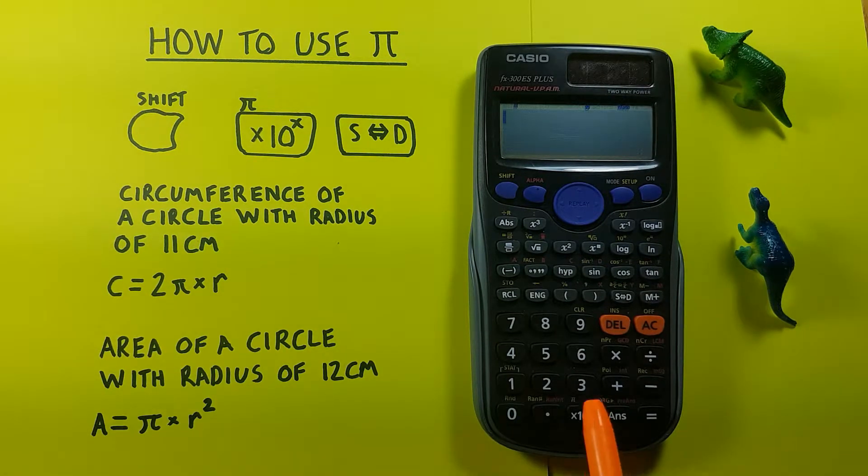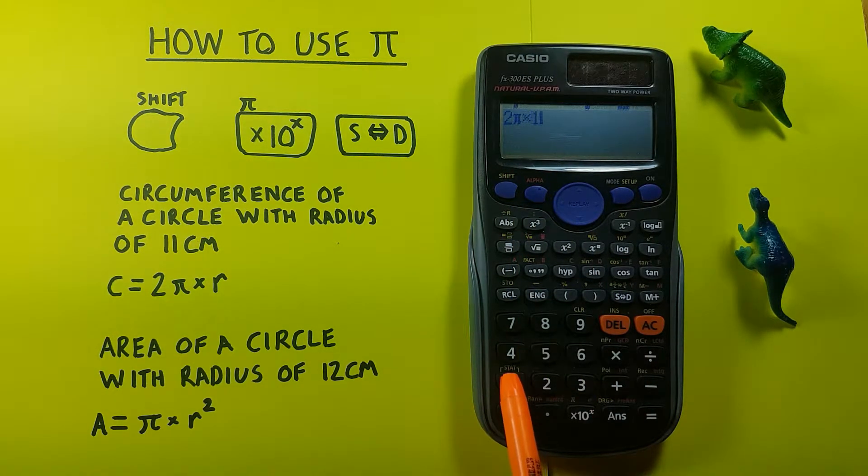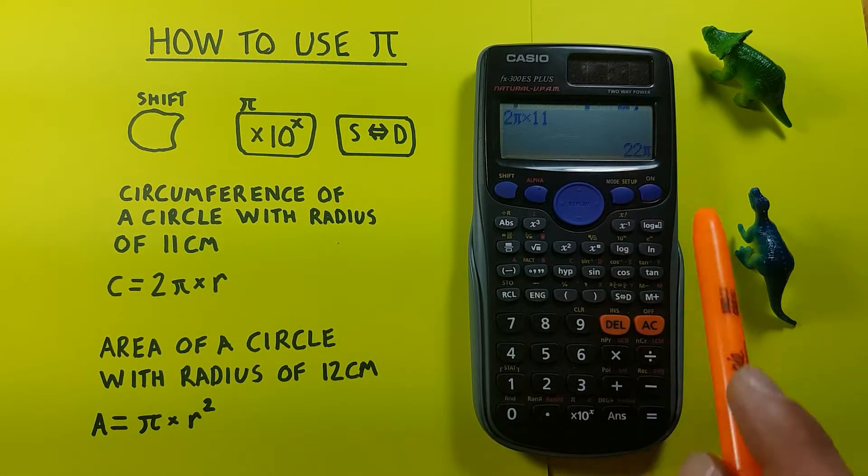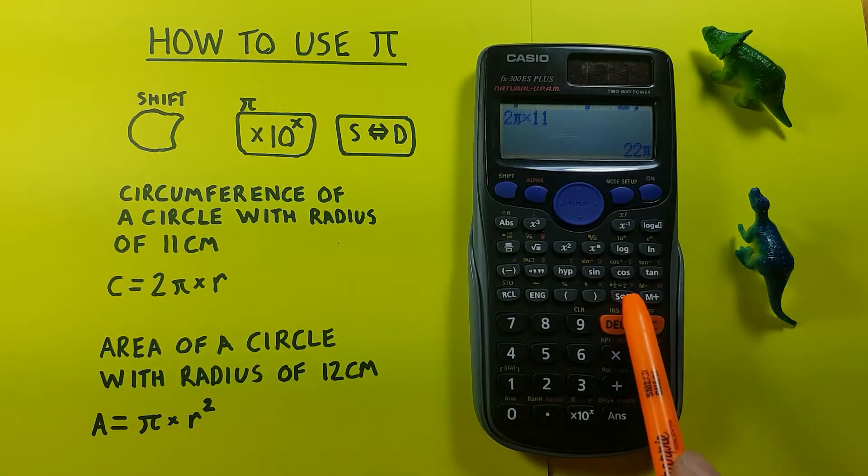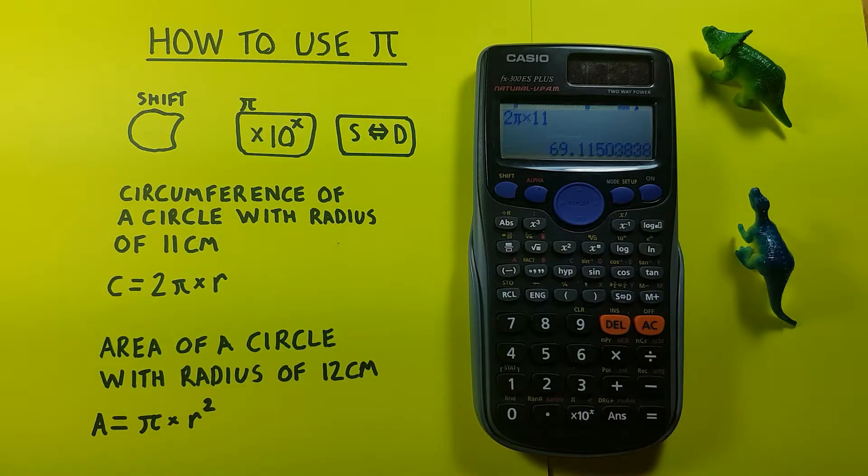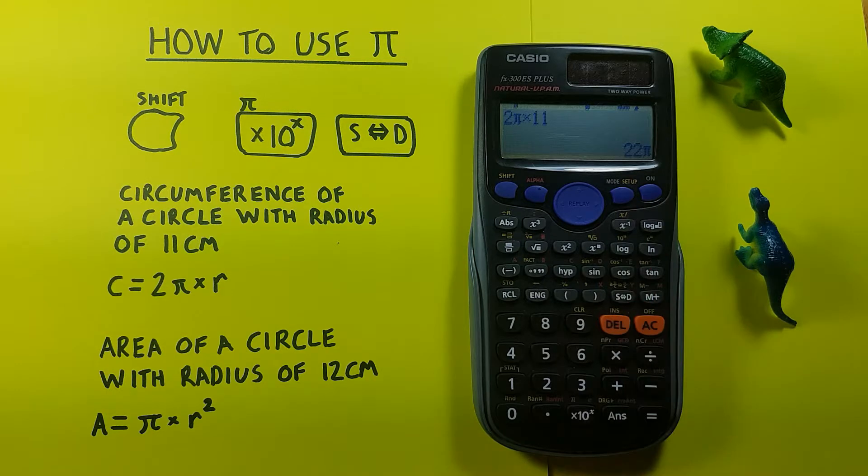So we can go 2 shift Pi, there's our Pi, times our radius which was 11 and equals gives us 22 Pi. If we want that as a decimal, all we do is press this s to d key here and that converts to 69.115 etc, and can be converted back again to 22 Pi.